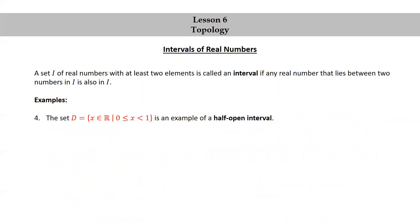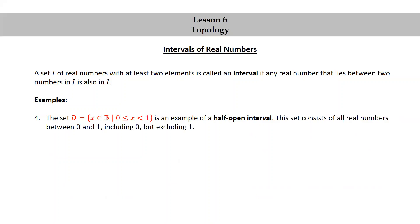The set D, consisting of real numbers x such that 0 ≤ x < 1, is an example of a half-open interval. This set consists of all real numbers between 0 and 1, including 0 but excluding 1. We will usually write the set D using the interval notation [0, 1), with a left bracket and a right parenthesis.